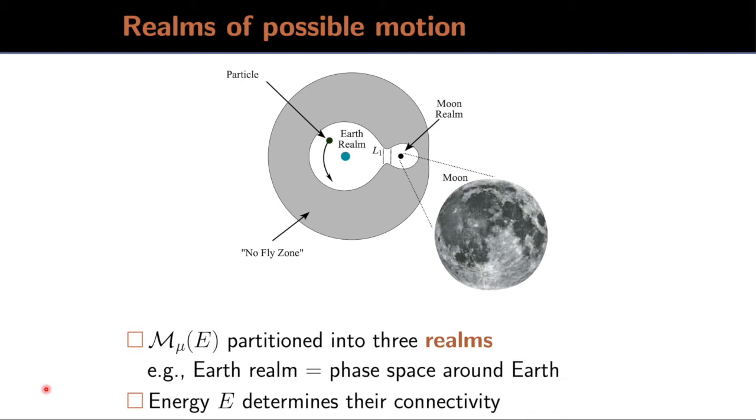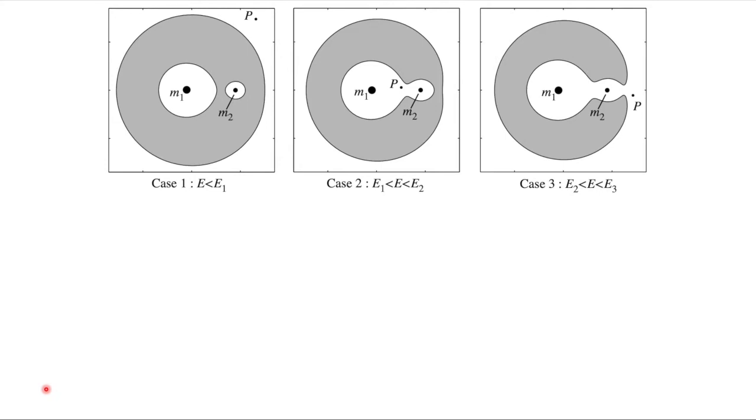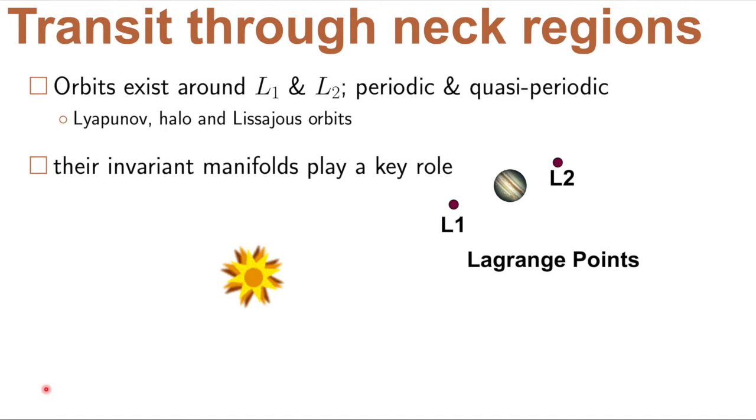So for the lowest energy case, all three realms are disconnected. And as we increase in energy, the realms start connecting up. The realm around M1 connects with M2 first. And then all three realms connect until there is no more gray region. The gray region here corresponds to an energetically forbidden region where you have negative kinetic energy. So it's just not possible. We have transit through those neck regions that open up, particularly around L1 and L2.